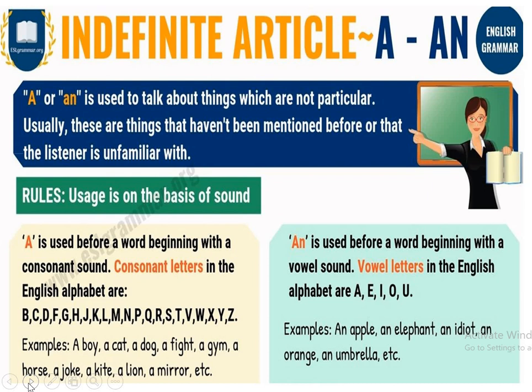'AN' is used before a word beginning with a vowel sound. In the English alphabet we have five vowels: A, E, I, O, U. Examples: an apple, an elephant, an idiot, an orange, an umbrella, etc. So we have understood that an indefinite article is used for a singular noun and for something that is not particular and has not been mentioned before the listener. 'A' is used in case of consonant sounds following the article.